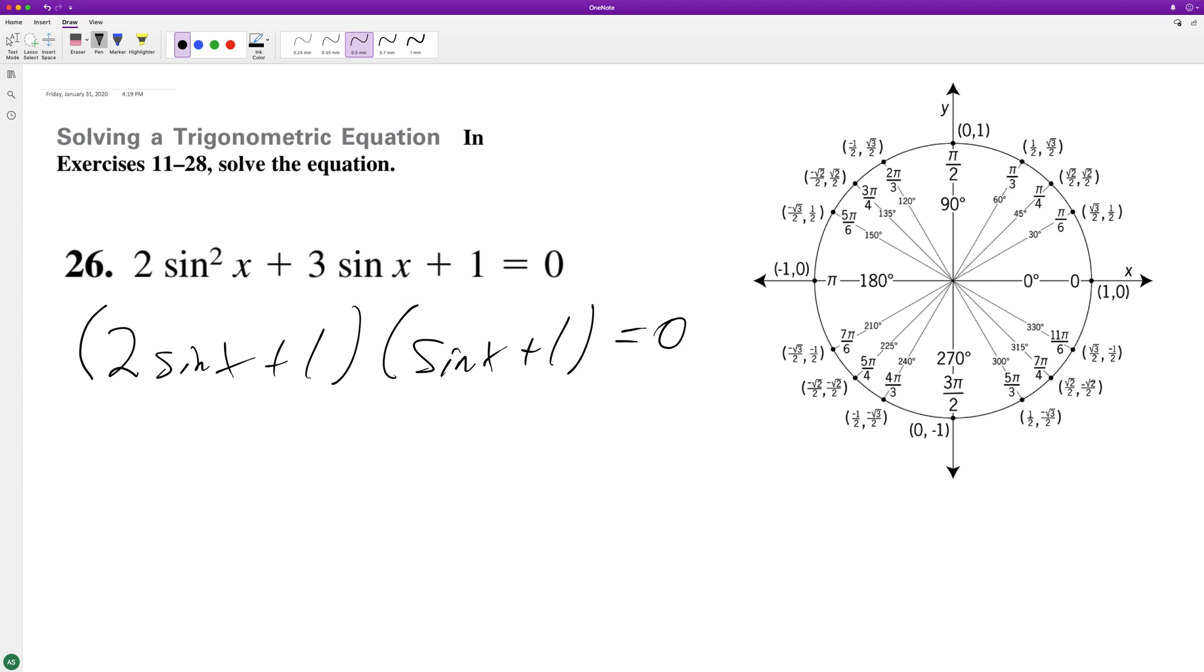So doing this, we need to set each of these equal to 0 to get this to work out because anything multiplied by 0 equals 0. So we'll have 2 sine of x plus 1 equals 0. This ends up being sine of x is equal to negative 1 half.